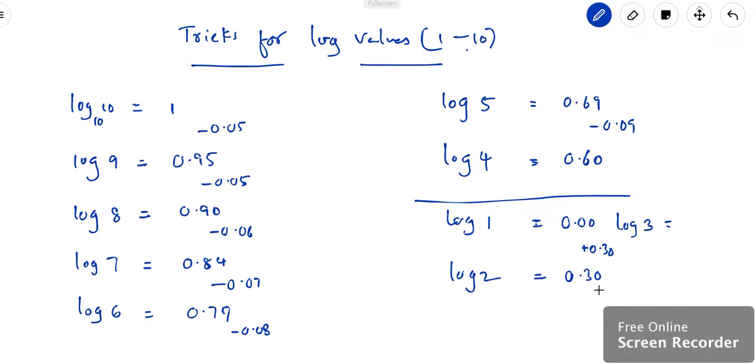And then for log 3, just remember, take an odd number like 0.17 and add it with 0.30. You're going to get 0.47.